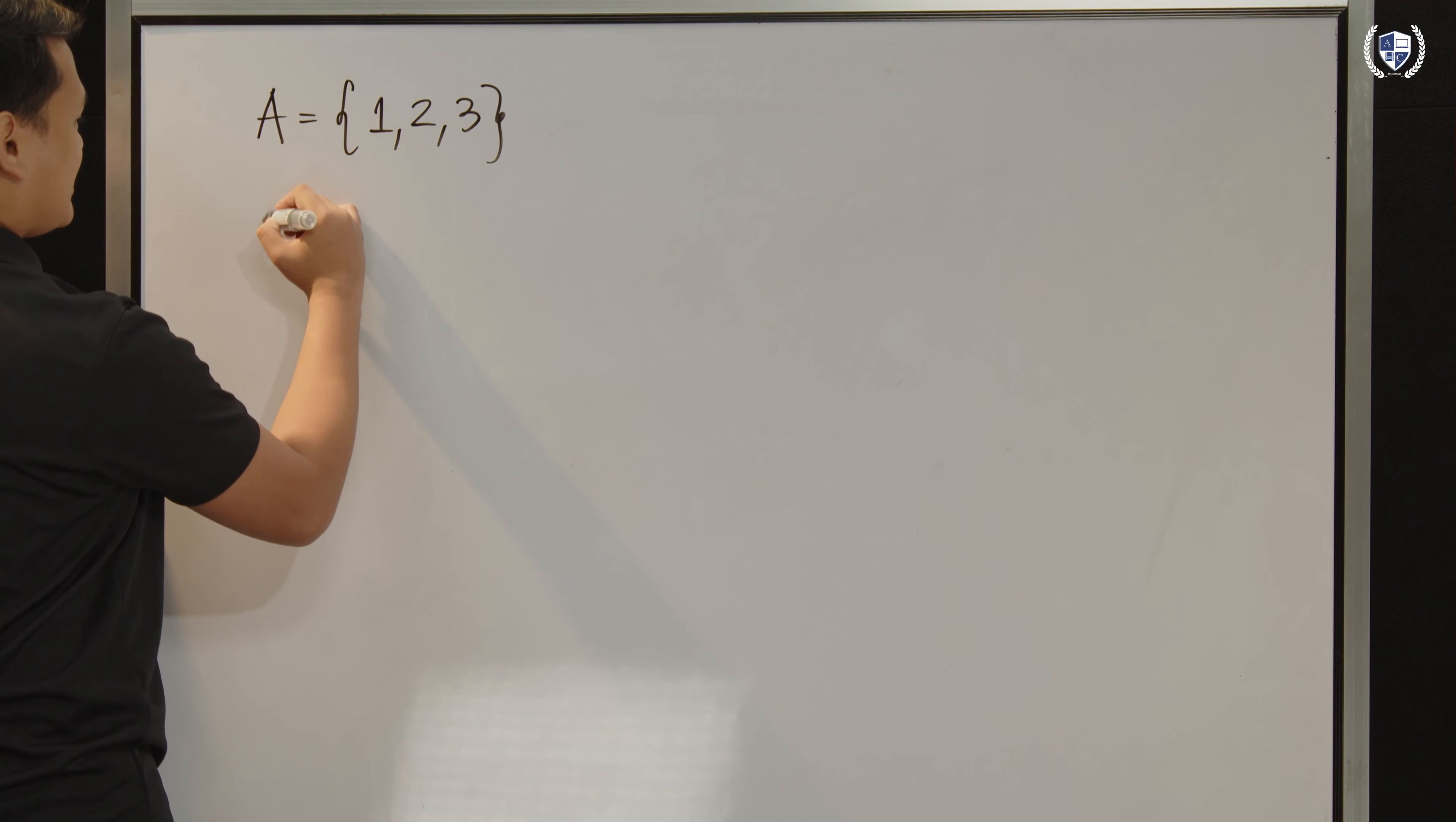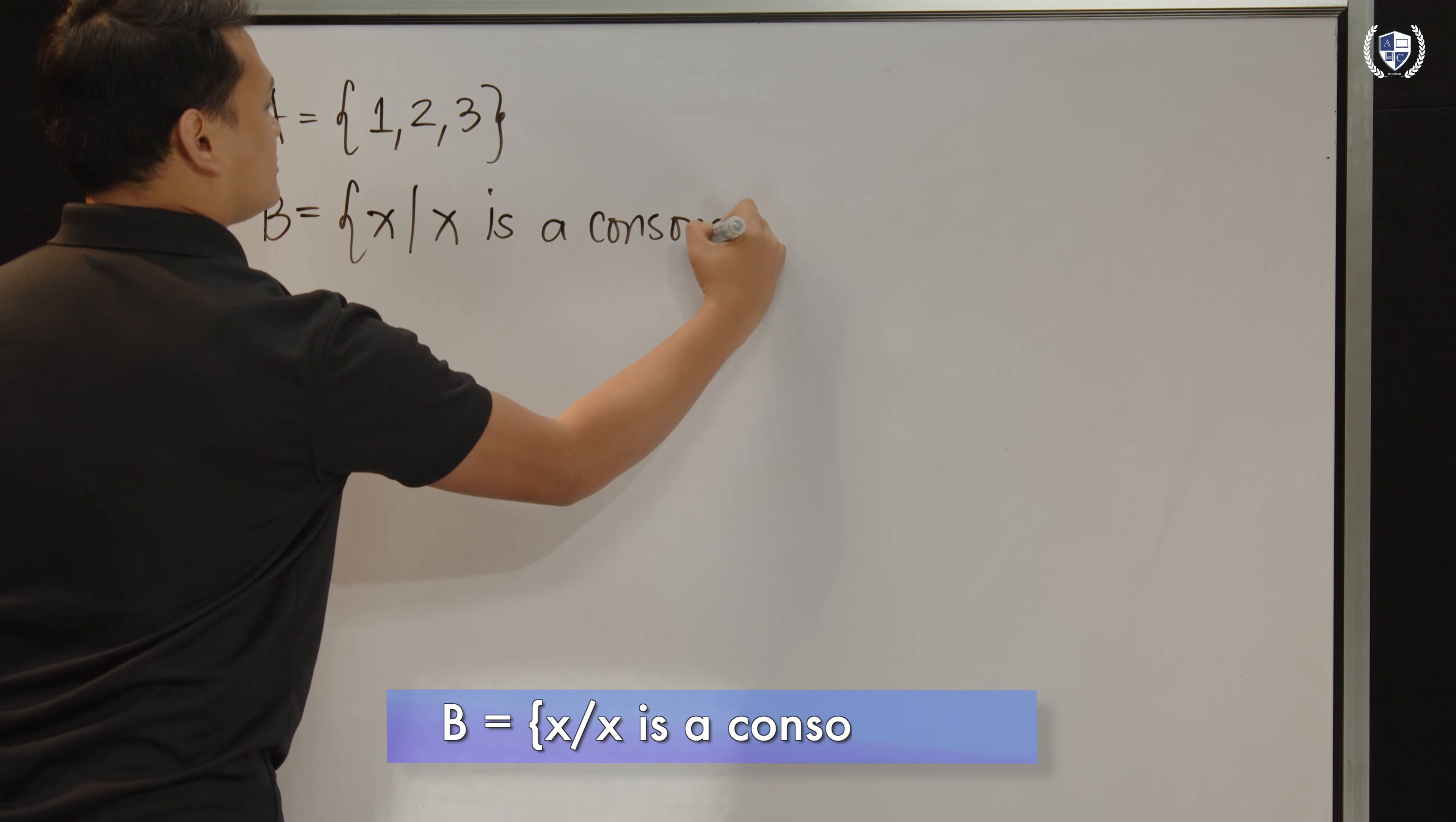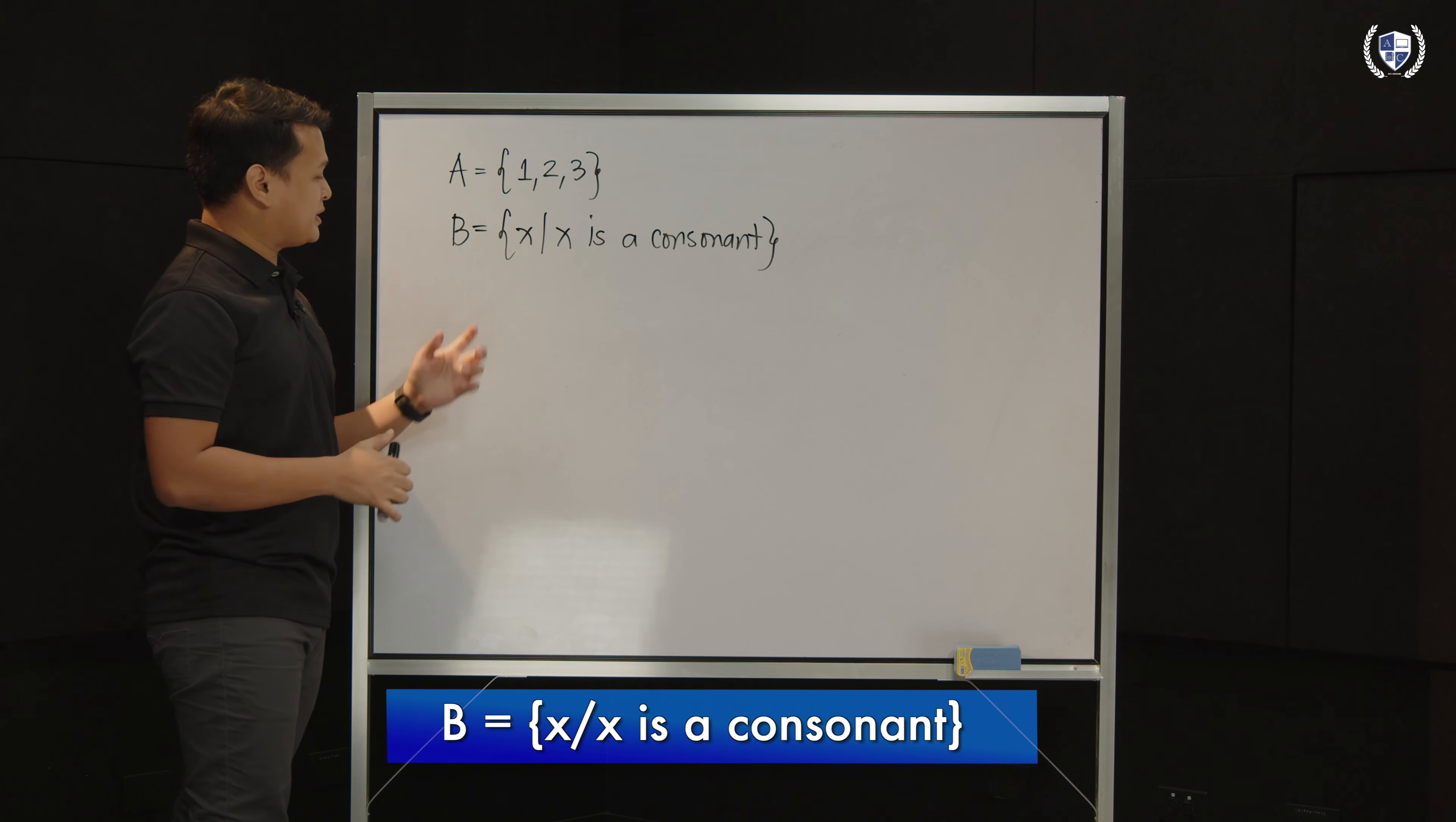Another example would be, let's say set B is the set of all X such that X is a consonant. So, alam nyo naman ang consonant, yung kabaliktara ng vowel sa ating English alphabet. Pwede ba natin pa rin ibigay or rather, mabibilang pa rin ba, countable pa rin ba yung elements ng ating set B? Oo naman po, 26 lang naman sila,